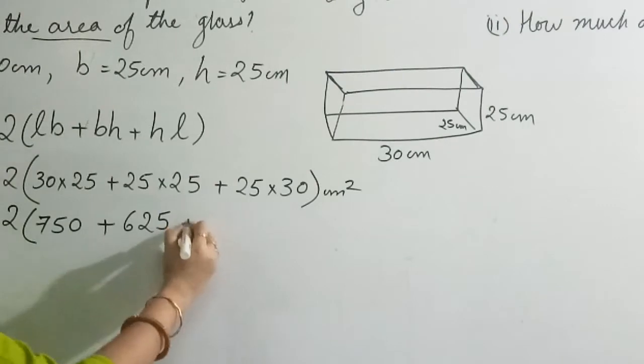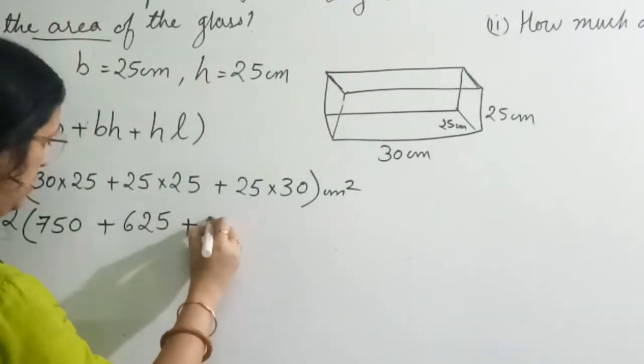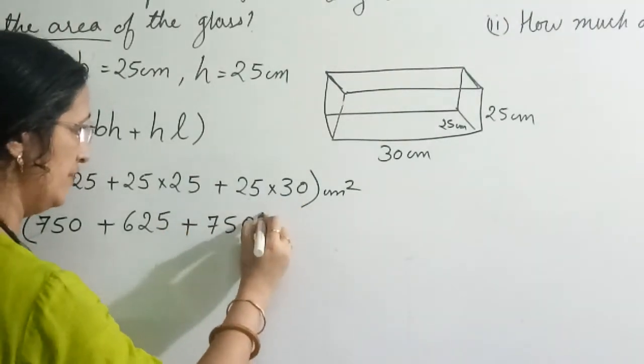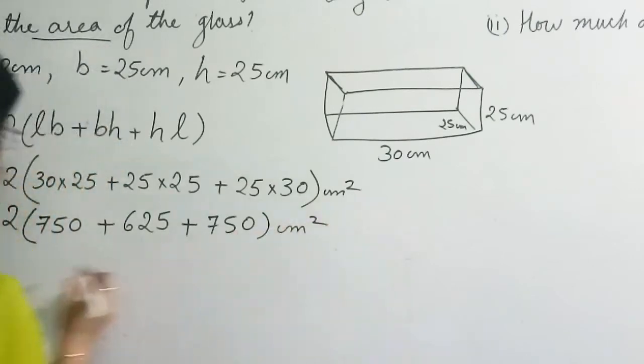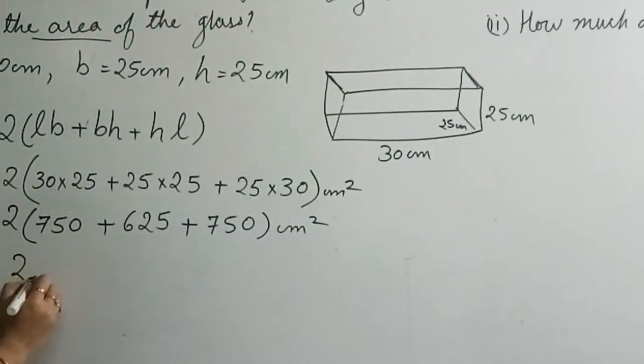And plus again 25 into 30, so it will be 750 centimeter square. Now we will add.